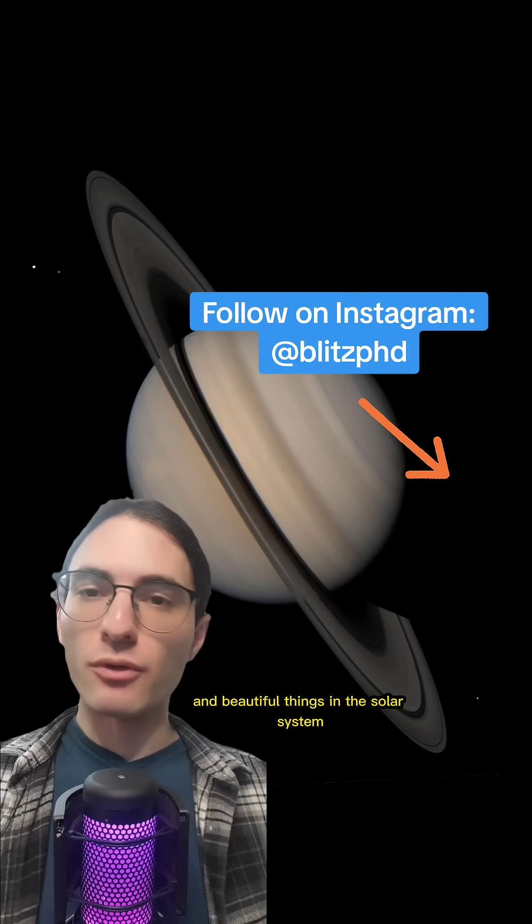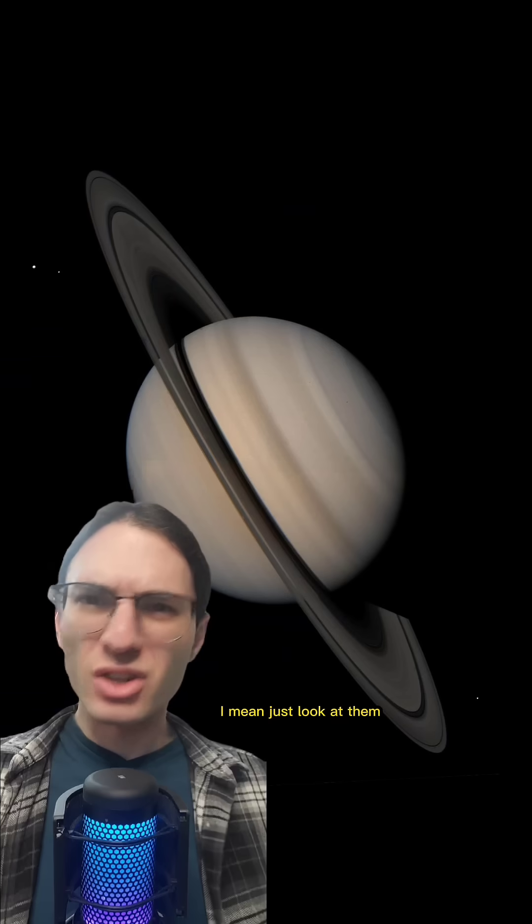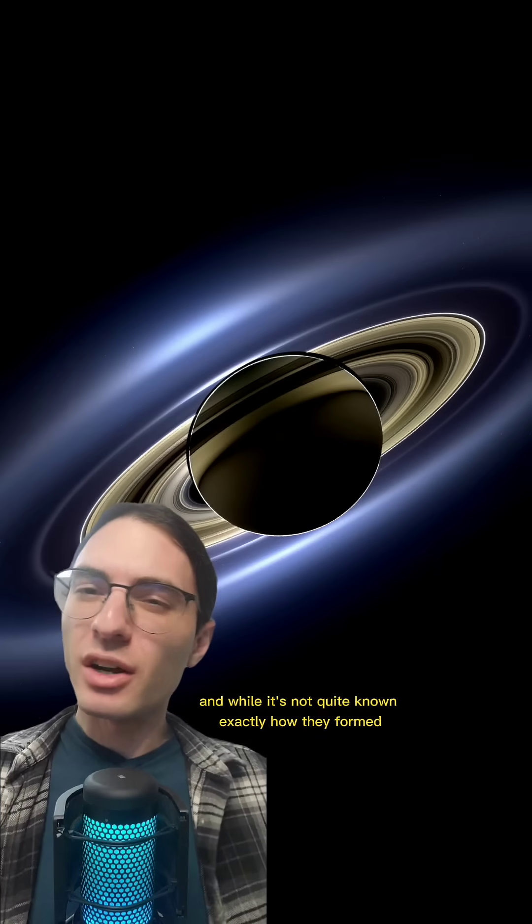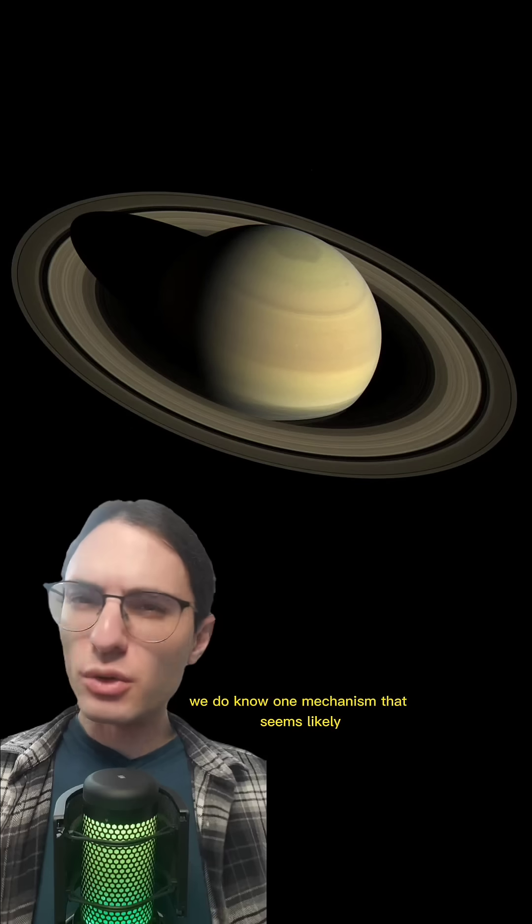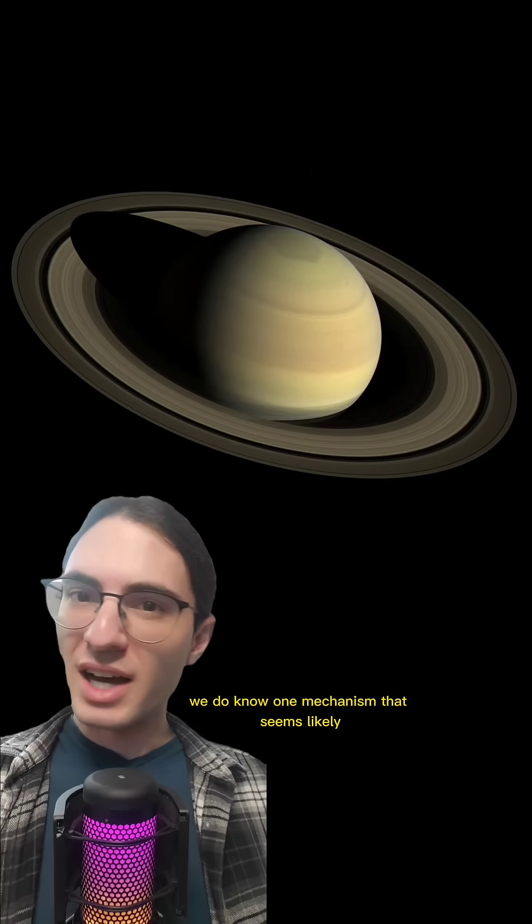Saturn's rings are the most spectacular and beautiful things in the solar system. I mean, just look at them. And while it's not quite known exactly how they formed, we do know one mechanism that seems likely: tidal disruption.